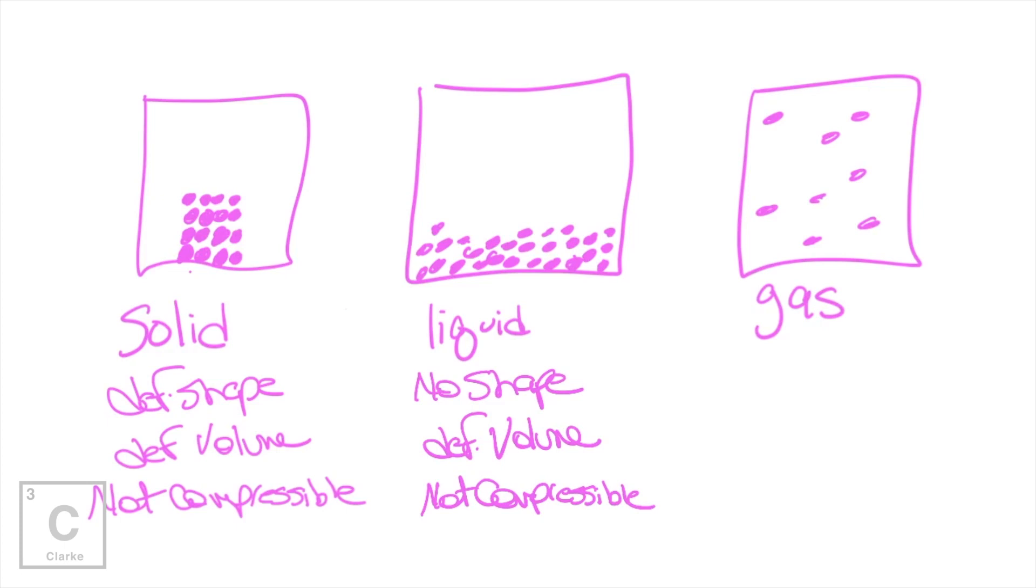Gases, whole different ballgame. Gases have no shape. They also have no volume. And that's because the intermolecular forces are so weak that these particles, they're just all over the place. They take the shape of their container. So if you have a gas, it's going to take the whole volume of the container. So it has no shape, no volume.